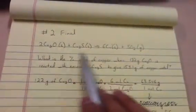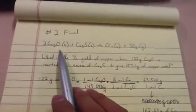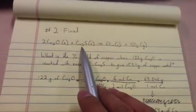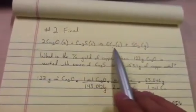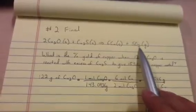Alright guys, so now we're going to be doing number 2 on the final exam as requested on the chat room. So we're given this formula here. We're given 2Cu2O plus Cu2S turns into 6Cu plus SO2.